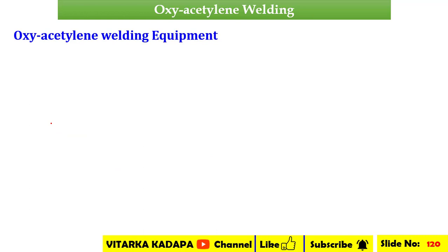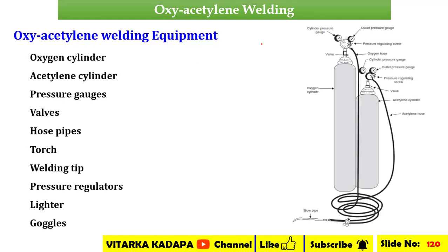Now, the tools and equipment used in oxy-acetylene welding. There are two cylinders: one is the oxygen cylinder and the other is the acetylene cylinder. One is black in color and one is maroon-red in color — oxygen is black, acetylene is maroon-red. For both cylinders, you can see one valve as well as one regulator and pressure gauges. Pressure gauges are used to control the pressure in the cylinders, along with pressure regulators.